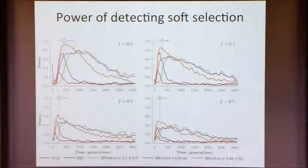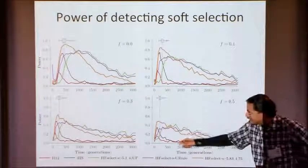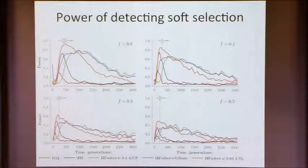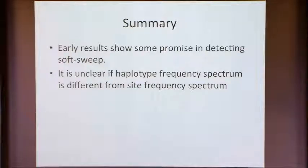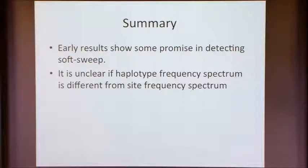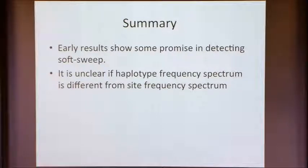Not surprisingly, we also have good power — not as good as in the hard sweep case, but good power here. For comparison, we have the IHS test and H12, which in our hands didn't seem to perform that well. Early results do show some promise in detecting soft sweep, but we still have a lot of work to do to distinguish soft sweep scenarios from hard sweep. We were just working on detecting whether the region was under non-neutrality in the presence of soft sweep. It's also somewhat unclear that the haplotype frequency spectrum really is a better discriminator than the site frequency spectrum even in the soft sweep case — in experimental data, there seems to be more signal in the site frequency spectrum even in the soft sweep scenario.